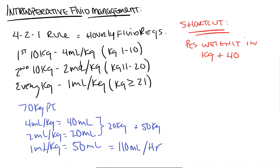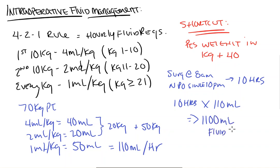So now that we know our hourly requirements, we need to figure out what our patient's total fluid deficit is. And this is a function of their time spent NPO. And so, if our 70 kilogram patient has surgery scheduled for 8 a.m. and they've been NPO since 10 p.m., that means their total NPO time is 10 hours. And so 10 hours NPO times 110 ml leaves us with a total fluid deficit of 1,100 ml.